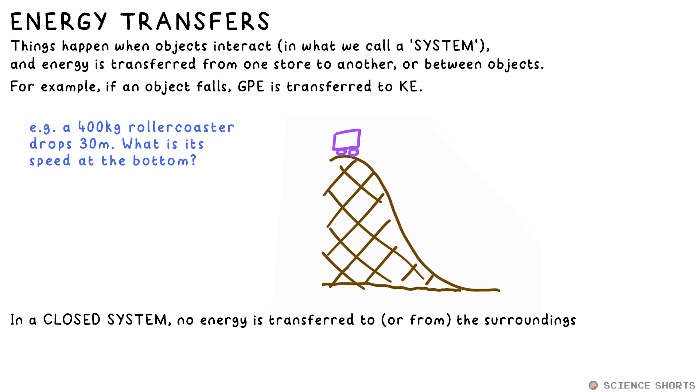For example, a roller coaster car held at the top of a ride just has GPE, gravitational potential energy. It doesn't have kinetic energy yet, but when it's let go and it starts to roll down the track, GPE is lost. Where does it go? It's turned into kinetic energy.